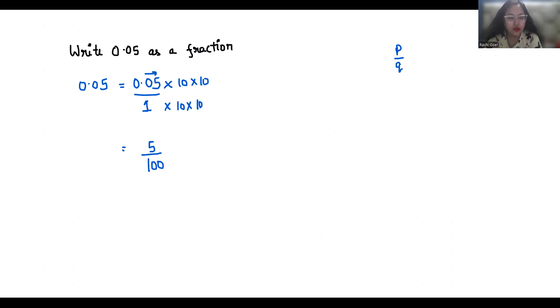So we are going to divide both numerator and denominator by 5. So it gives us 1 by 20. So 0.05 in form of fraction is 1 by 20.